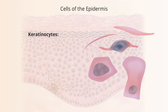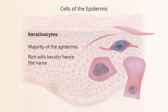Keratinocytes all look remarkably different, as if they're all different cells. In fact, they're the same cell at different levels of maturation. The skin is constantly maturing from its basal layer that sits on top of the dermis, all the way up to the stratum corneum at the very top. As the cells mature, they change in what they're making and how they look — but they're all keratinocytes, stacked in layers of increasingly mature states.